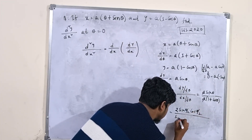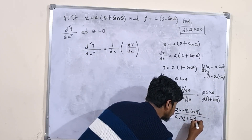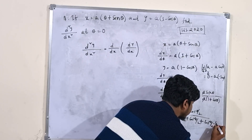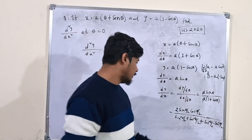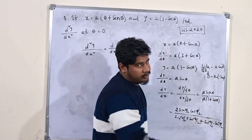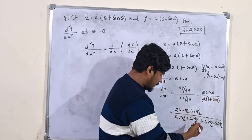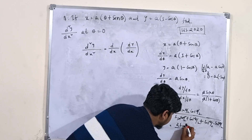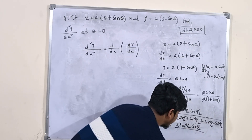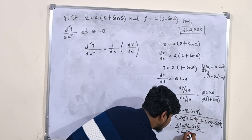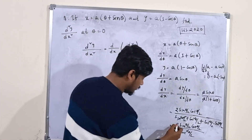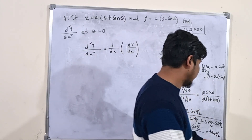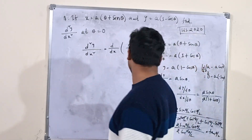Using the identity sin²(θ/2) + cos²(θ/2) = 1, and the cos 2θ formula: cosθ = cos²(θ/2) − sin²(θ/2), we get 1 + cosθ = 2cos²(θ/2). Substituting in, sin(θ/2) cancels with cos(θ/2) in the denominator, giving dy/dx = tan(θ/2). This result is clean and easy to differentiate further.